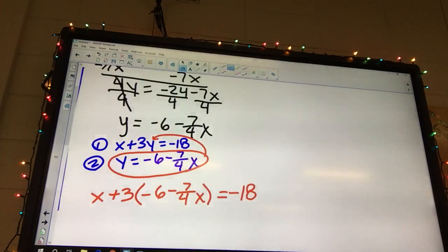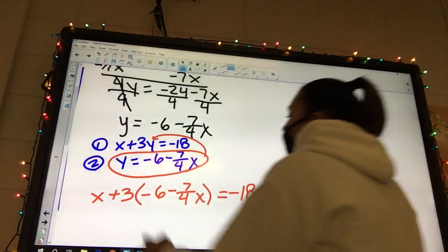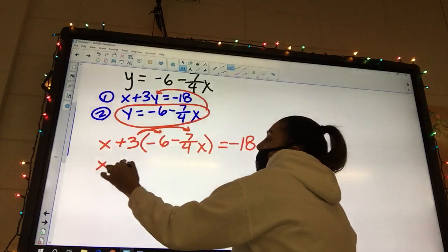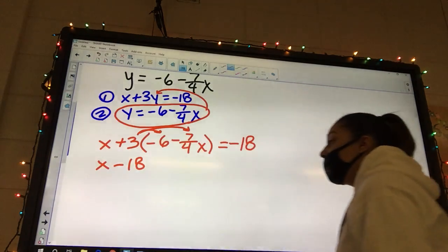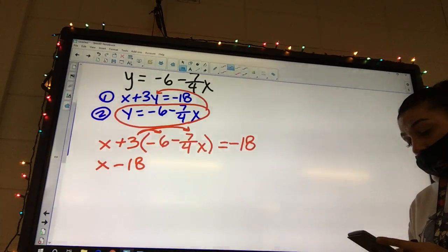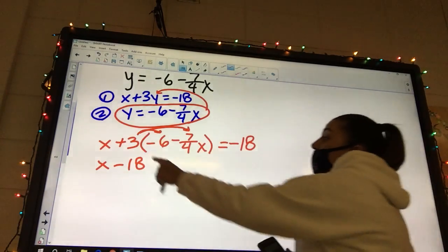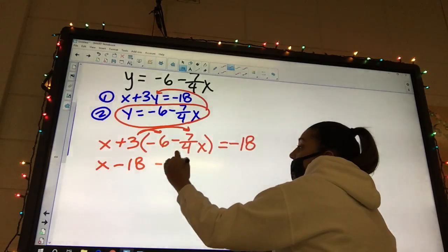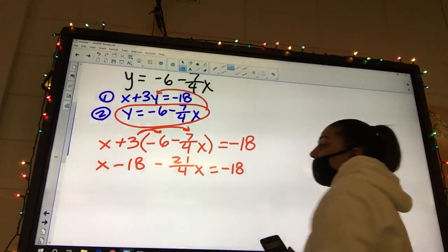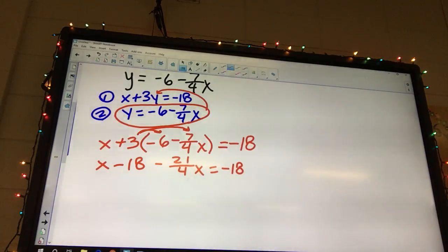Okay, what's our next step? Distribute. Okay? And this is a fraction one, so you've got to use your calculator. But so I'm going to distribute. So I've got x minus 18. 1 over 4, I don't think it's going to reduce. And 3 times negative 7 over 4 is going to be negative 21 over 4x equals negative 18. What's your next step?